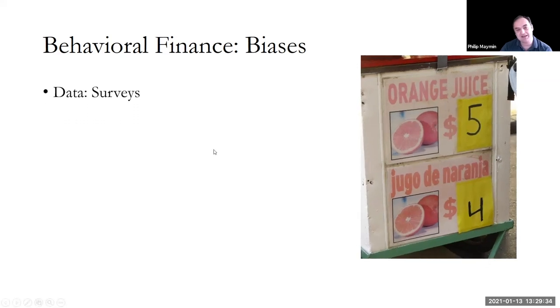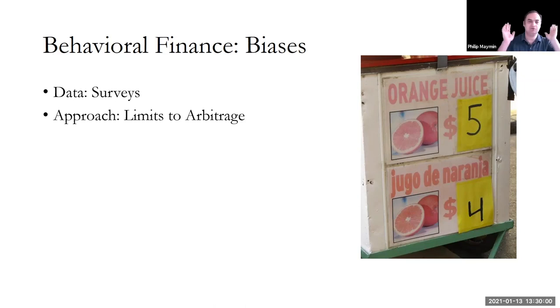The data that behavioral finance brings in addition, over and above, you need the clean stock price data, of course, but in addition, they look at surveys and research and ask people questions and see if that's related to forecastable and interesting insights. The main approach there, rather than sorting and deciles, is to first explain that there are something preventing smart money from exploiting and bringing to equilibrium any pricing discrepancy. So why doesn't somebody come in?